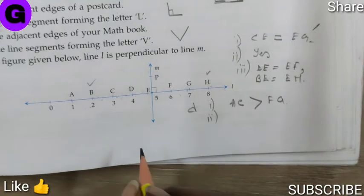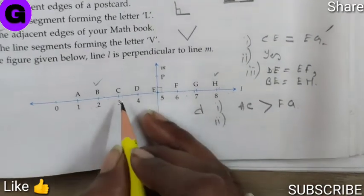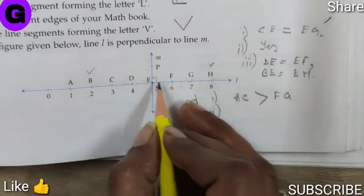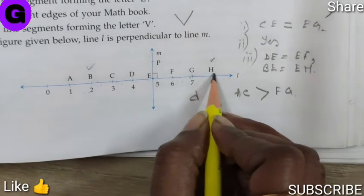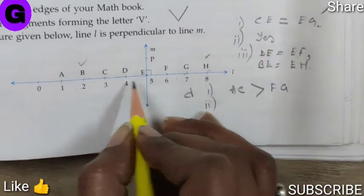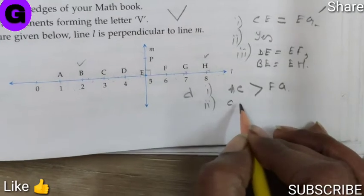Next one. CD is equal to GH. CD is equal to GH. Yes, of course, CD one space, GH one space. So it is equal.